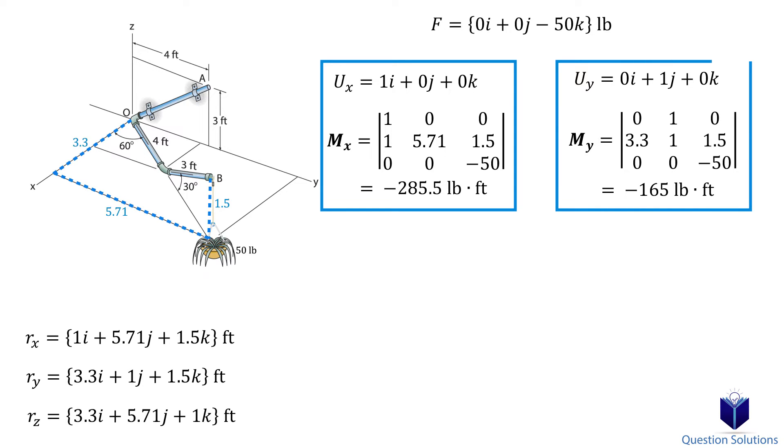Lastly, the z-axis can be represented as a unit vector using 0i plus 0j plus 1k. Solving using the position vector for the z-axis and the force gives us the moment created above the z-axis.